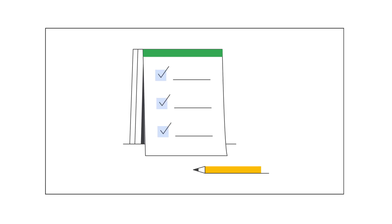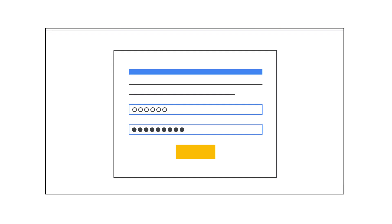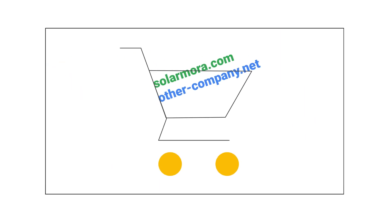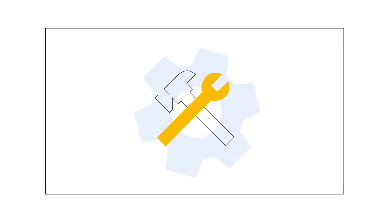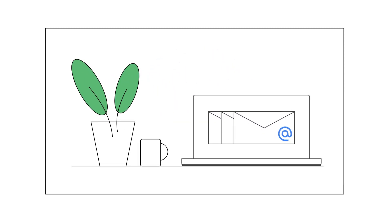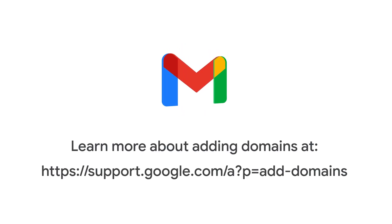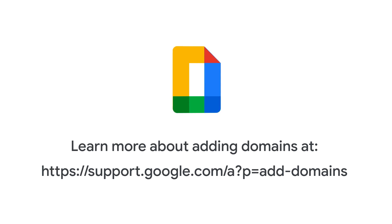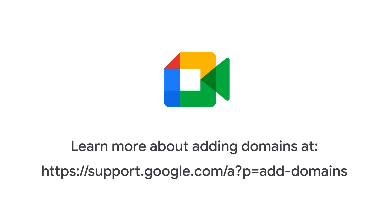Here are some tips to get you started. Be sure you can sign in to your domain host — this is usually the company where you purchased your domain name. If you need help changing any of your domain settings, be sure to contact your domain host. For more information about adding another domain to your Google Workspace account, visit the Add Multiple Domains or User Alias Domains article in the Google Workspace Admin Help Center.